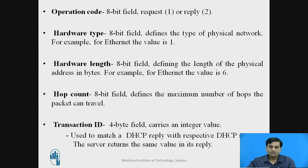The first field is the opcode or operation code field. This is an 8-bit field that defines the general category of the message. The message could be a request message or a reply message. If this field contains a value of 1, then the message is a DHCP request generated by the client. If this field contains a value of 2, then the message is a reply from the server to the client.